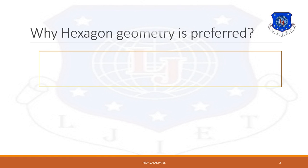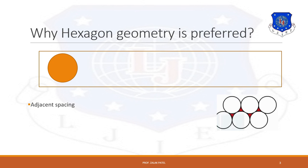Next, why is hexagonal geometry generally preferred over different shapes in a cellular system? First, we consider the circle. Why is a circle not the preferred choice for the cellular concept? Because in a circular pattern, adjacent circles can have gaps in between or can create overlapping regions. You can see that adjacent spacing will be present in the case of a circle.